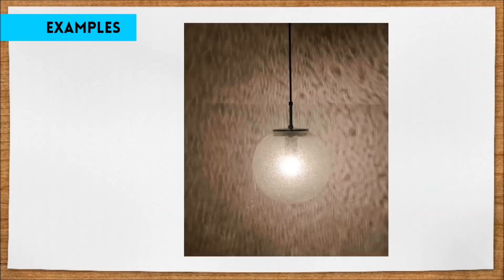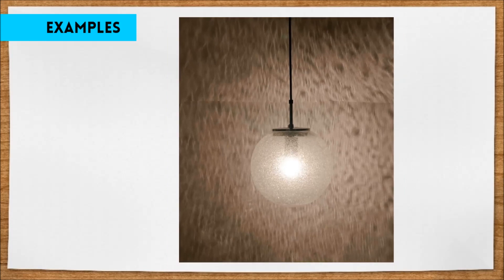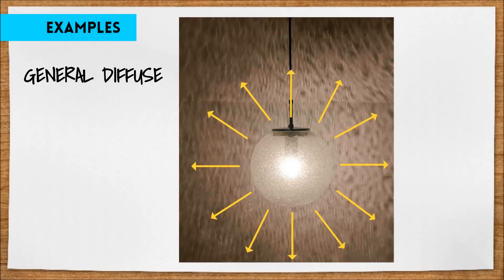What would you say this one is? This fixture is an example of general diffuse distribution. You can clearly see that the light is being evenly distributed around the entire fixture in all directions.